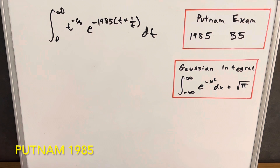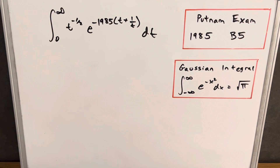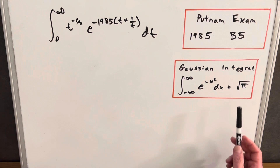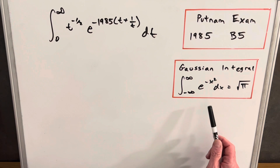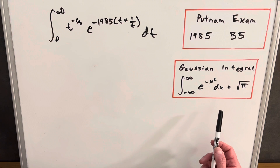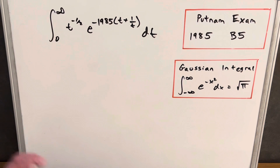Today we have a really interesting problem from the Putnam exam, all the way back from 1985 — problem B5. We have the integral from 0 to infinity of t to the minus one-half, e to the minus 1985 times (t + 1/t) dt. They did give us a hint on the right: just the definition of the Gaussian integral. When you see a problem like this, you're kind of looking for either the gamma function or the Gaussian integral.